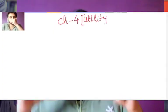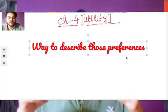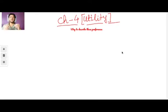In this chapter, we will learn about a way to describe those preferences. Utility. A utility function is a way to assign numbers to all consumption bundles such that if we prefer one consumption bundle to the other, we have to assign a higher number to the preferred consumption bundle.